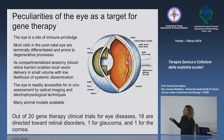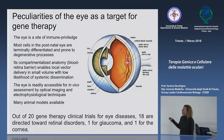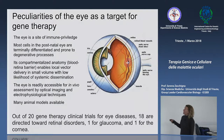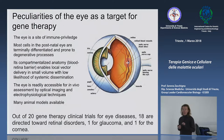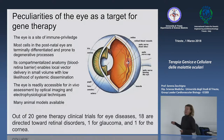Tante terapie possono essere iniettate per via intravitreale oppure per via sottoretinica, così da targettare diversi tipi cellulari dell'occhio. Per la sua conformazione anatomica e per la presenza di una barriera emato-oculare, l'occhio è un sito immunoprivilegiato. Le evidenze sulla presenza di anticorpi anti-AAV nel trattamento locale nell'occhio hanno una rilevanza relativa: non ci sono grosse evidenze che anticorpi neutralizzanti possano inficiare l'utilità della terapia.